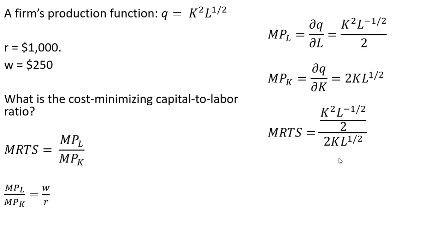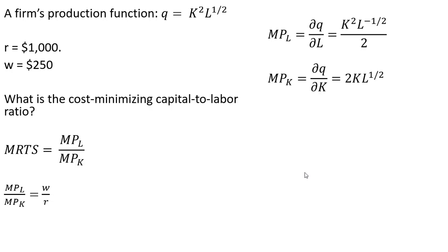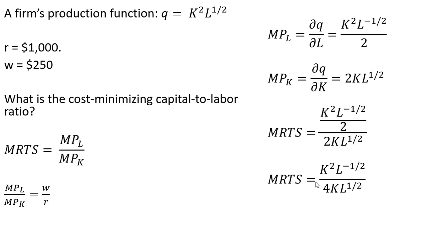Rewriting and simplifying: multiplying the numerator and denominator through by 2 gives us this result. Simplifying further, K squared divided by K leaves us with K in the numerator, and bringing L to the minus 1/2 down into the denominator just gives us L in the denominator.